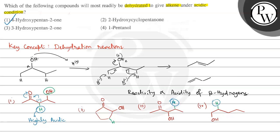So the correct answer is option number one: 4-hydroxypentane-2-one. This is the required answer. I hope you understood the concept well. Best of luck!